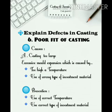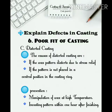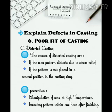6. Poor fit casting. Causes: A. Casting too large — excessive mold expansion caused by: 1. Too high a temperature. 2. Use of wrong type of investment material. Prevention: 1. Use correct temperature. 2. Use correct type of investment material. B. Casting too small — too little mold expansion, caused by insufficient heating of the mold. C. Distorted casting — causes: 1. Wax pattern distorts due to stress relief. 2. Pattern not placed in central position in the casting ring. Prevention: 1. Manipulation of wax at high temperature. 2. Investing pattern within one hour after finishing.